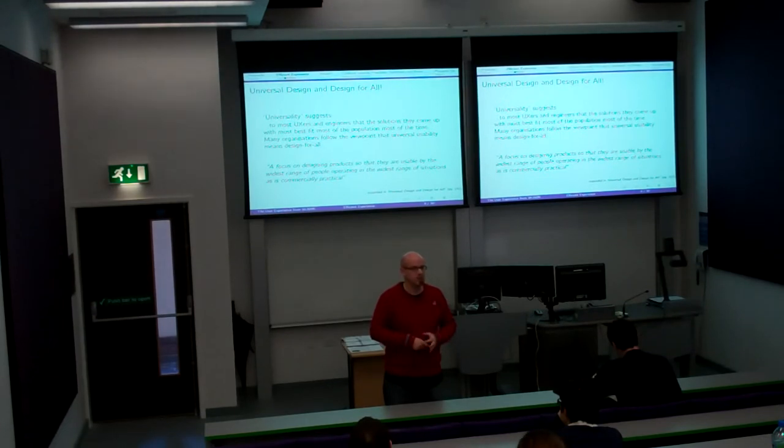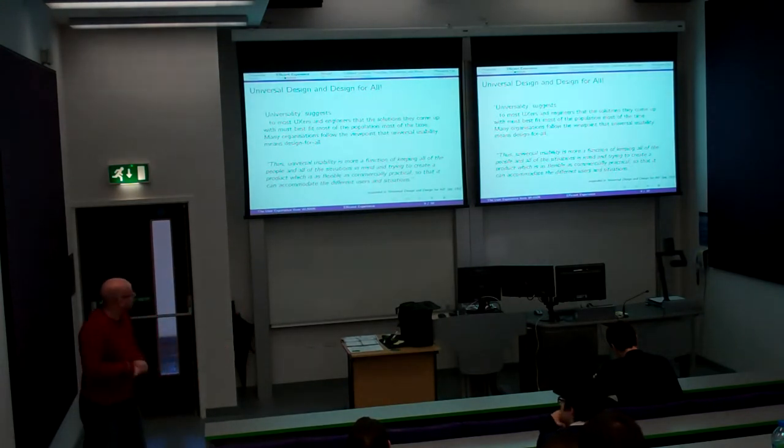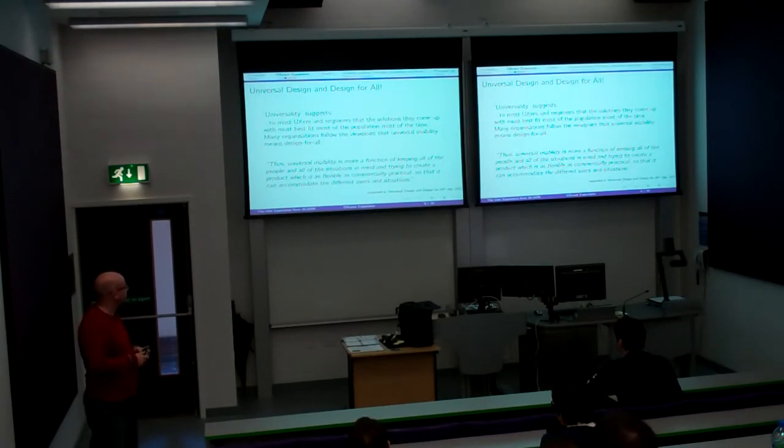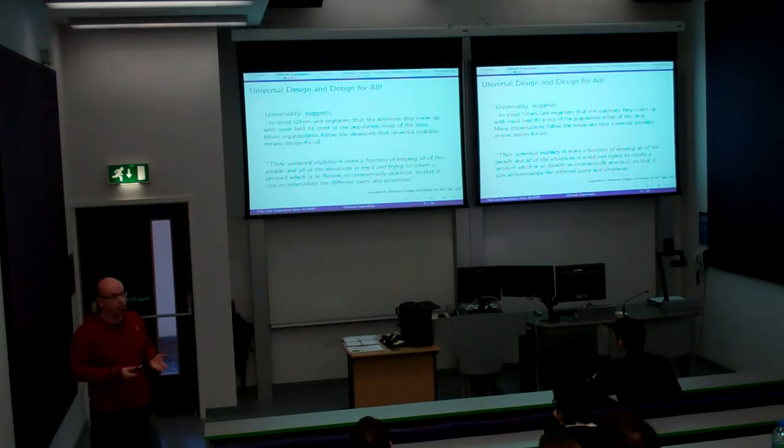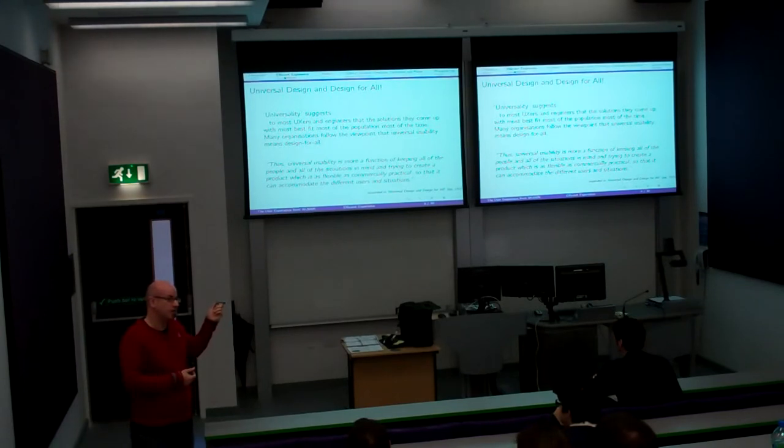If the universal usability really existed, then we wouldn't need this accessibility thing because it would already be universal. We wouldn't need makers who are making little left and right signs because we could already get that. Because it's universal. So, it can't be universal. It's got to be quite personal, I think, anyway. So, this is the quote that you'll get as well. Universal usability is more functionally keeping all of the people and all of the situations in mind. That's true. To try to create a product that is flexible but also commercially practical. It doesn't say anything about openness. It doesn't say anything about the possibility of extension.